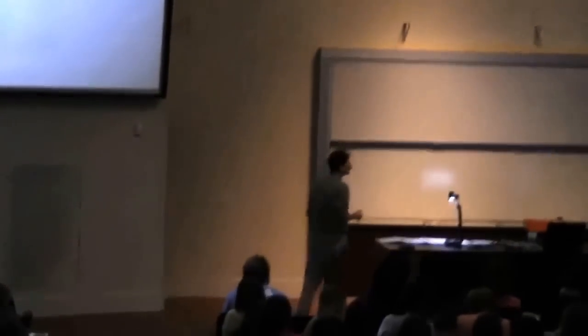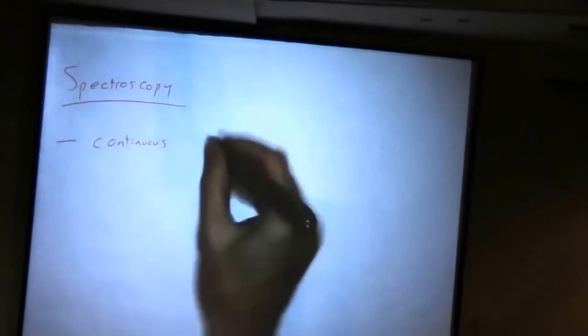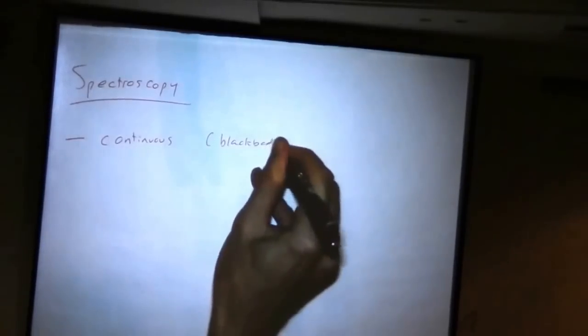There are three different types of spectrum that we deal with, so let's list them here and some of their properties. We have continuous, and we've already worked through an example of a continuous spectrum and that's a blackbody or thermal.